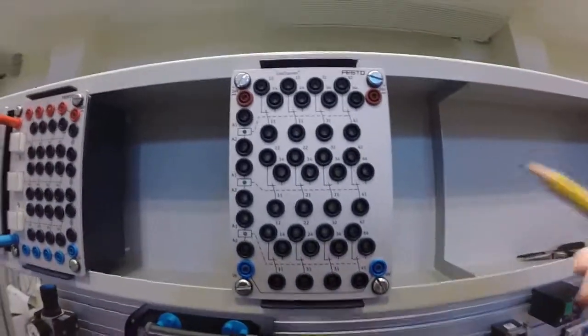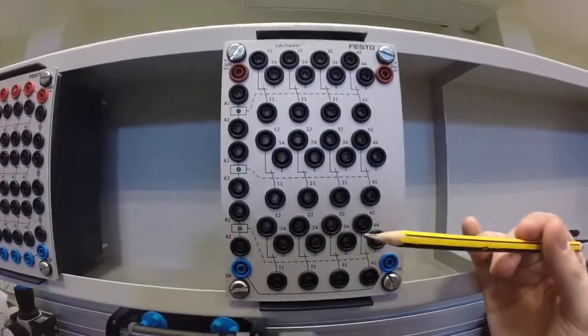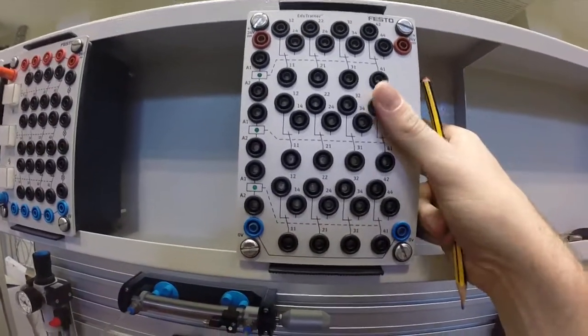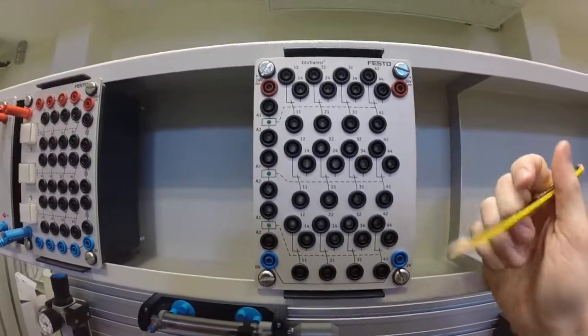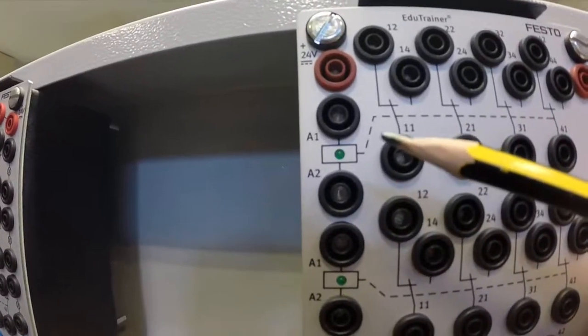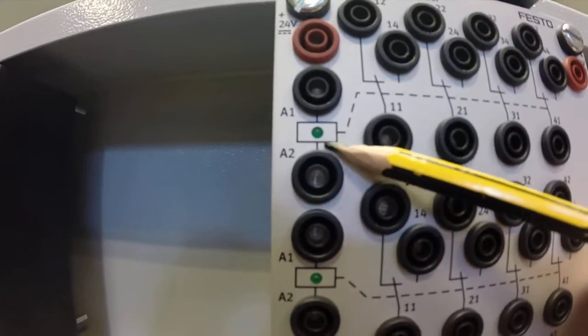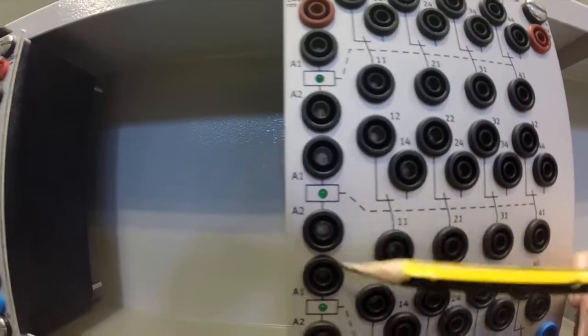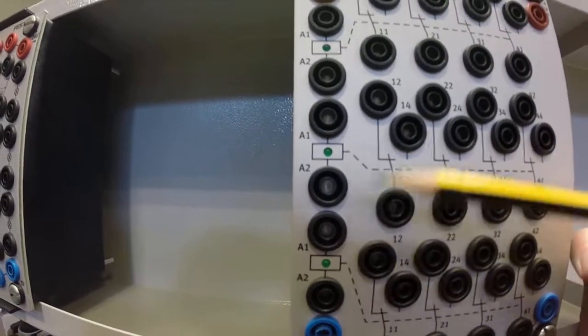So the next electro box we're going to look at is the relay box. We have a box here that's full of relays. It's got three relays. You see here's our first relay, here's our second relay, and here's our third relay.